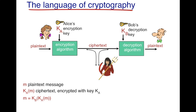Alice first uses her encryption algorithm and her key K_A on the plain text M, which generates the cipher text K_A(M). Once Bob receives the cipher text, Bob applies the key K_B and the decryption algorithm to regenerate the plain text M. The goal is to ensure that even though Trudy intercepts the cipher text K_A(M), she cannot apply any key to decrypt the original message M. As long as K_B is safe with Bob, Trudy will not be able to understand what Alice sent.